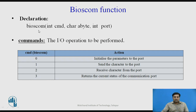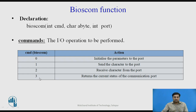The BIOSCOM function is declared with three parts: command, byte, and port ID. The command parameter accepts values 0 to 3. If you pass command 0, you initialize the parameters of the port. If you pass value 1, you send a character to the port. If you pass value 2, you receive data. If you pass value 3, you get the current status of the communication port.